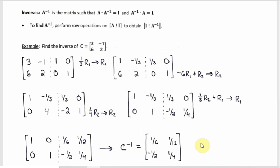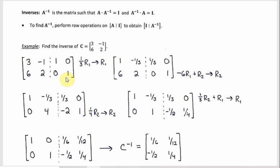Next is how to find the inverse of a matrix. The inverse A⁻¹ is the matrix such that A times A⁻¹ in either order gives the identity matrix back. The method is: augment A with the identity matrix, then perform row operations until you get the identity matrix on the left side. Whatever ends up on the right side will be A⁻¹. Let's use matrix C: 3, negative 1, 6, 2, augmented with I.